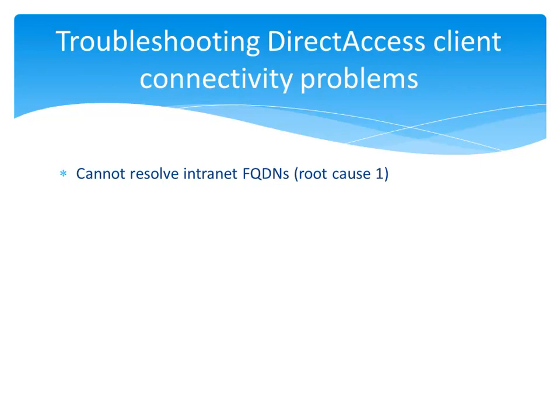In the first problem, it appears that Client1 on the intranet subnet cannot resolve intranet fully qualified domain names, or FQDNs. The root cause is that the wrong root CA was chosen in the Direct Access server setup wizard for IPsec authentication.